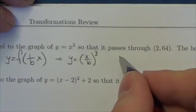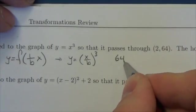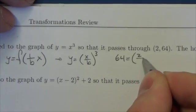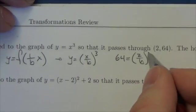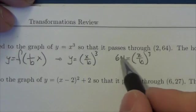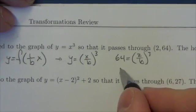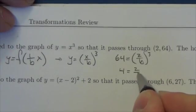So 2, 64, meaning that the y-coordinate is 64, and the x-coordinate here is 2, so 2 over b, and this is going to be cubed. Now I'm going to take the cube root of both sides, so it'll get me 4 is equal to 2 over b.